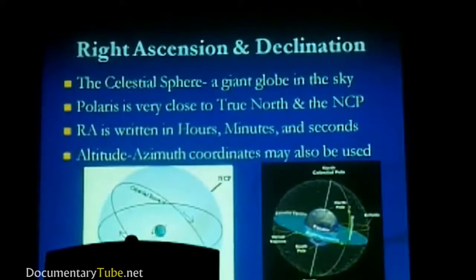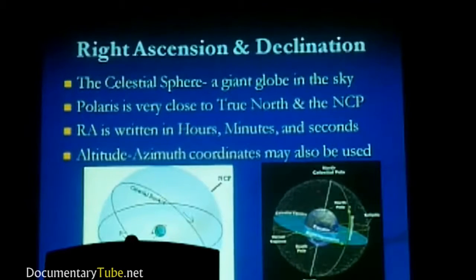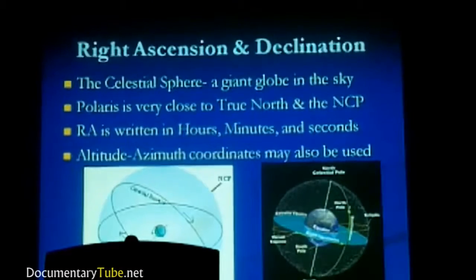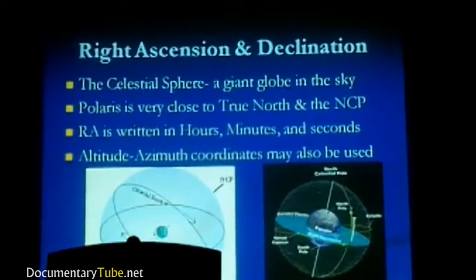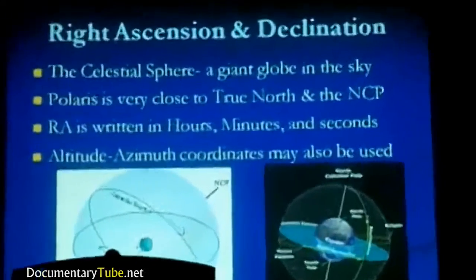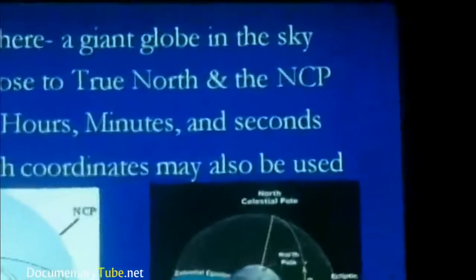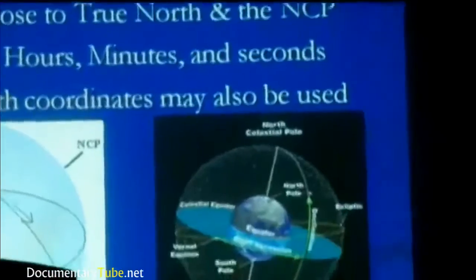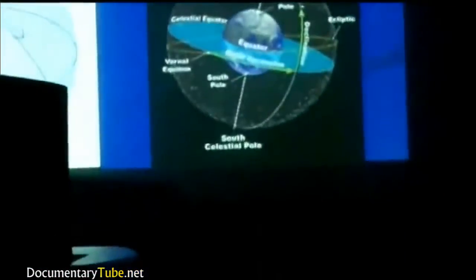Two of the key coordinates are called right ascension and declination. Right ascension and declination are the two coordinates you can use to find any object in the sky. When you look at a chart listing an object's right ascension and declination — for instance, to locate the Andromeda galaxy — those coordinates are fixed. They never change. Unlike other types of coordinates, they will always remain constant.